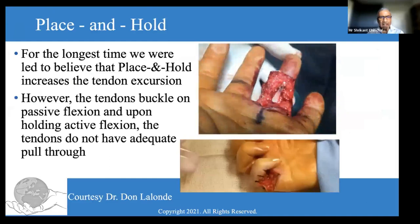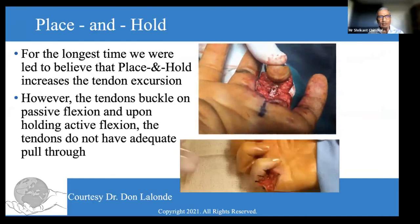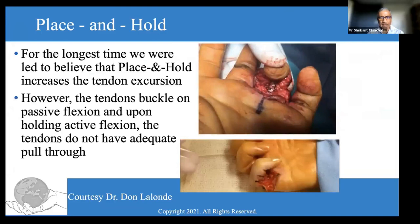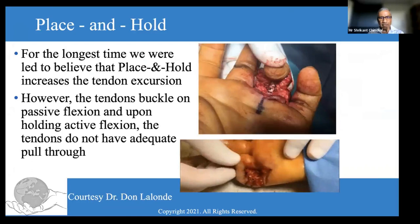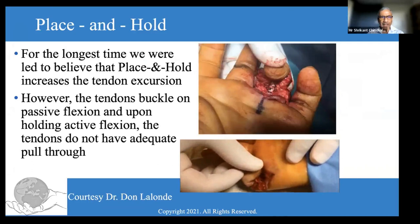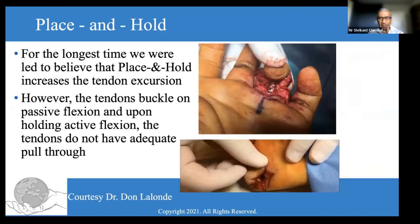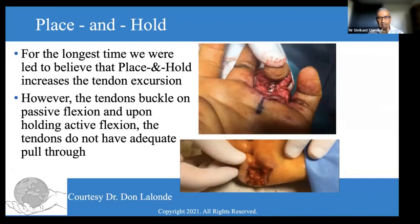It is important to understand the mechanism of finger extension. When initiating finger extension from a fully flexed position, the central slip initiates PIP joint motion first. As PIP joint extension improves, the lateral bands translate dorsal to the anatomical axis of rotation at the PIP joint and subsequently produce extension at the distal phalanx. We must incorporate translation of lateral bands above the joint axis using various methods to regain finger extension. For the longest time we were led to believe that place-and-hold increases flexor tendon excursion. However, Don Lalonde showed that placing the finger in a flexed position and asking the person to hold it, the tendon undergoes a jerky action. When you flex the finger passively, the tendon buckles and has very minimal proximal excursion, making this method inefficient.